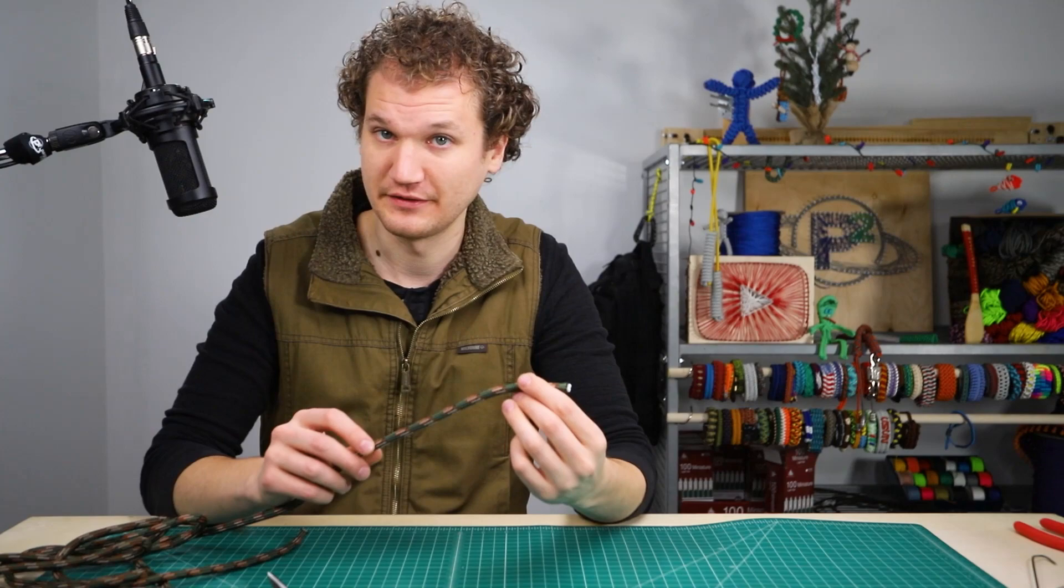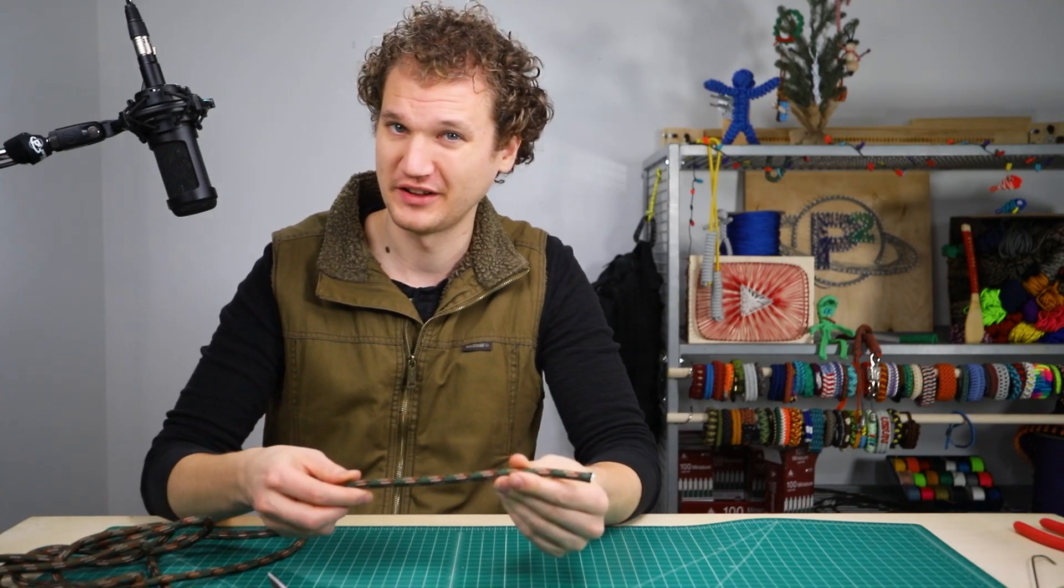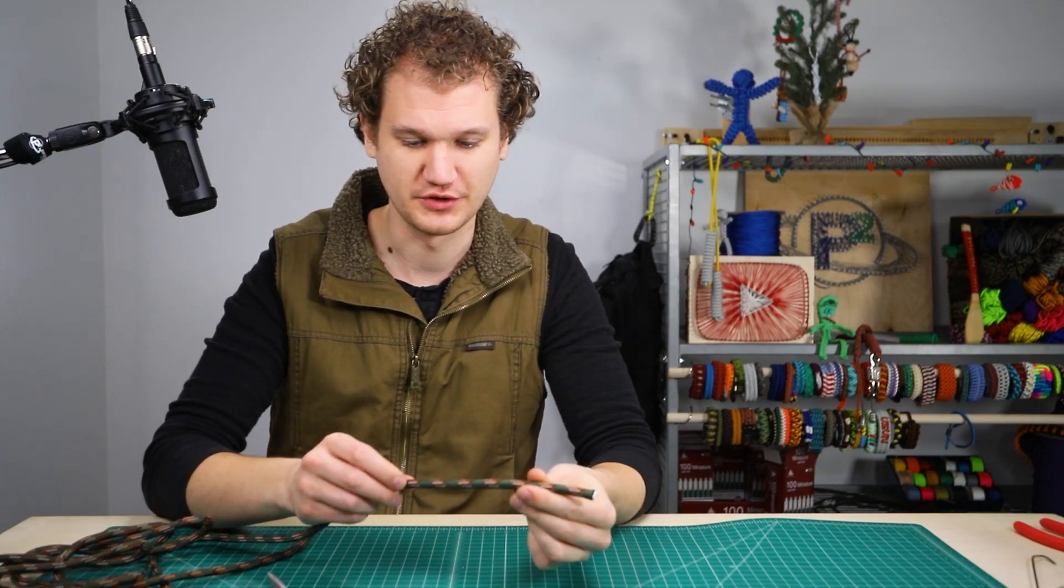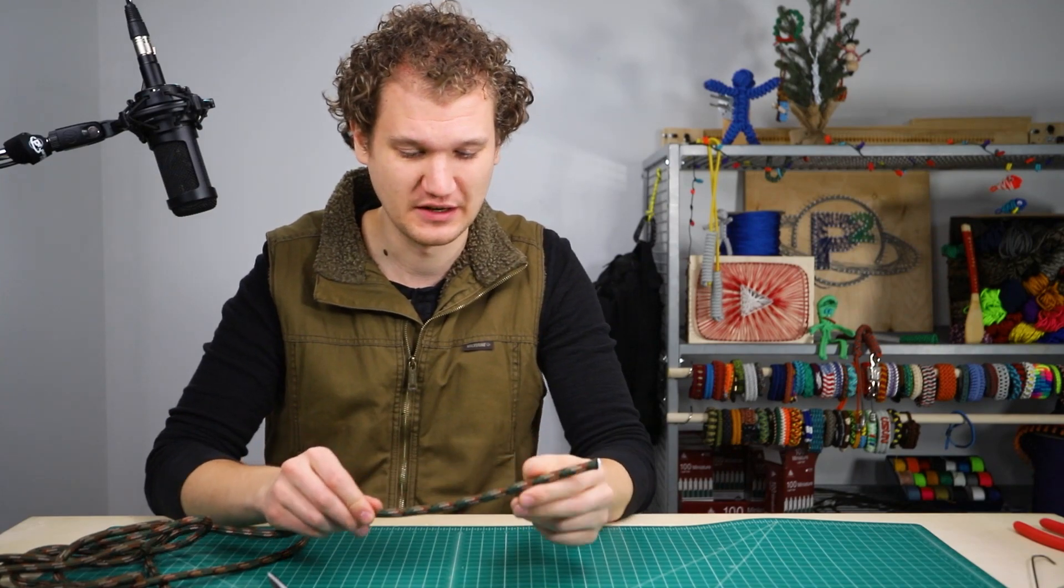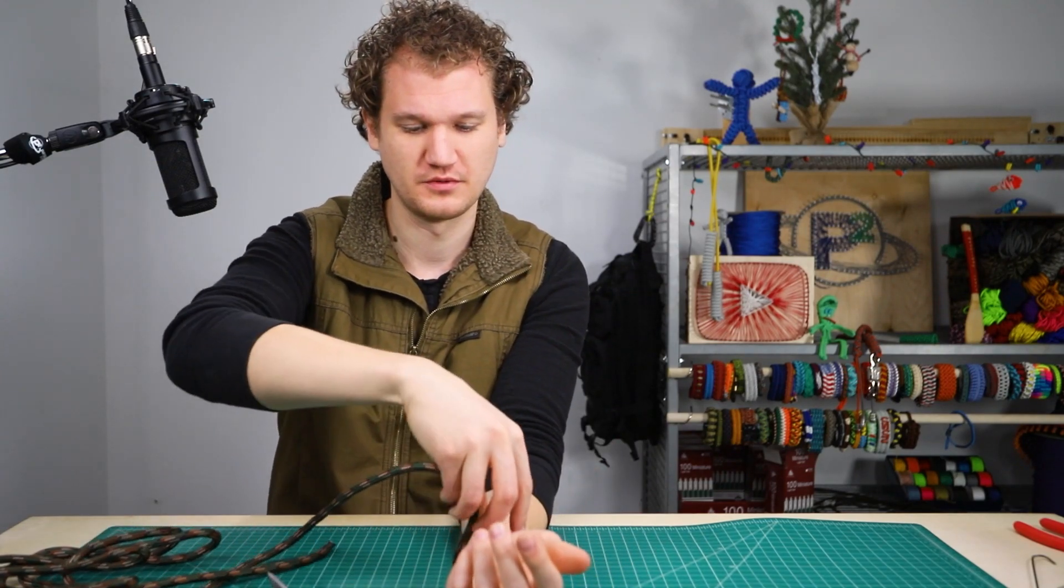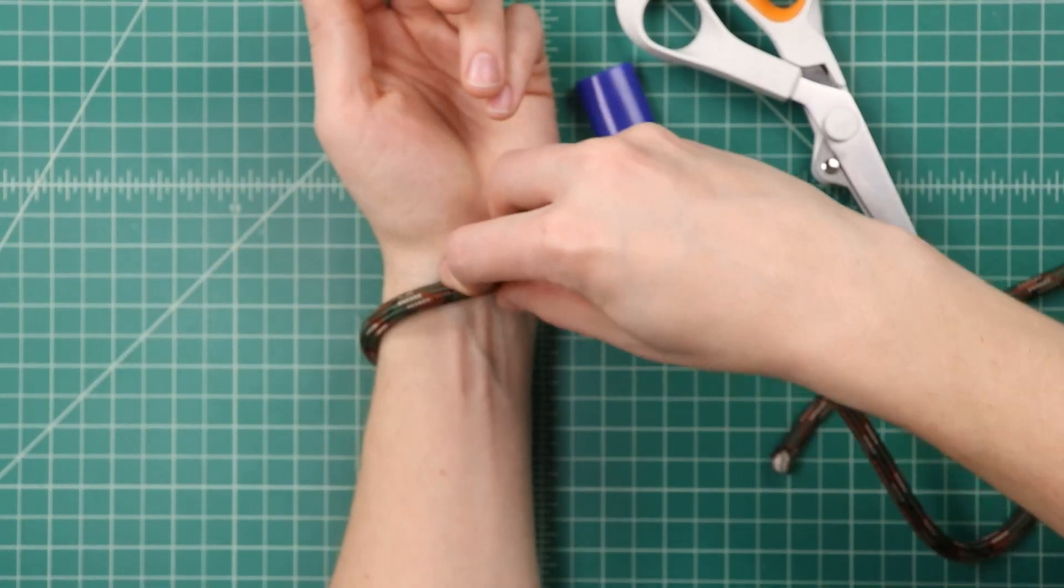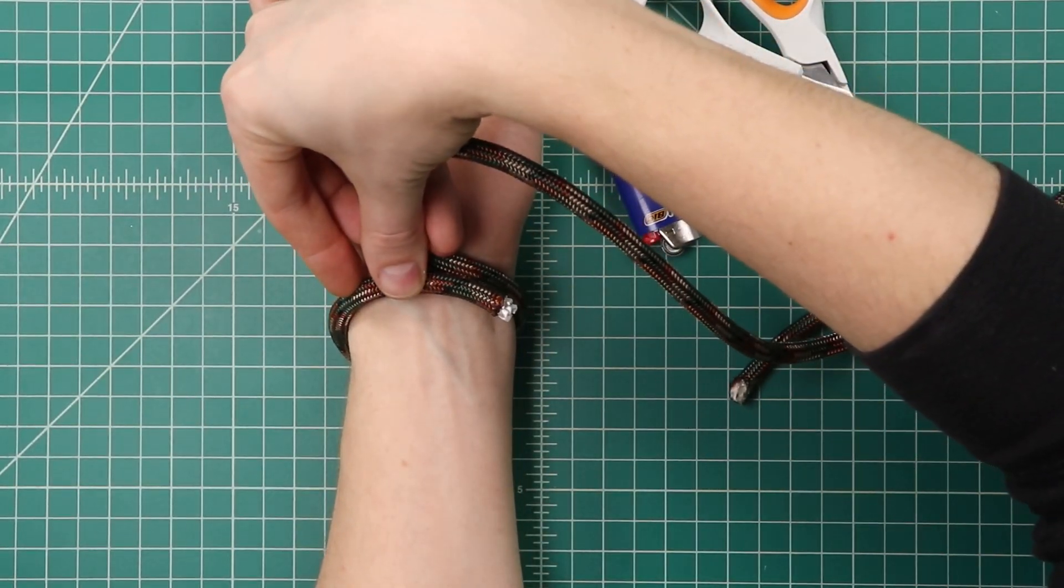For your first one of these, I would recommend leaving a little bit of extra cord. It uses so little anyway that it won't cost much to leave two extra inches. Measure it around your own wrist, and then I'm going to overlap by just an inch or two.